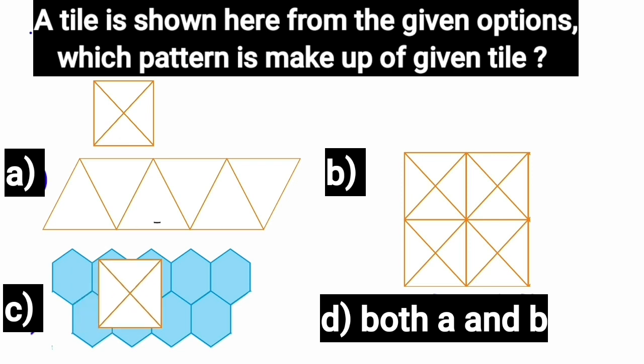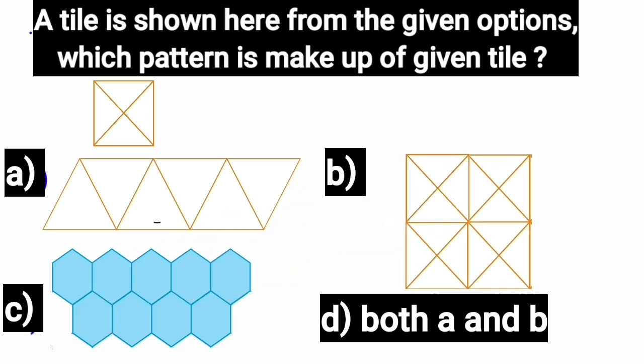It matches with the pattern at option B. Pattern B is made up of the given tiles, so B is the correct option and we will put a tick mark here.